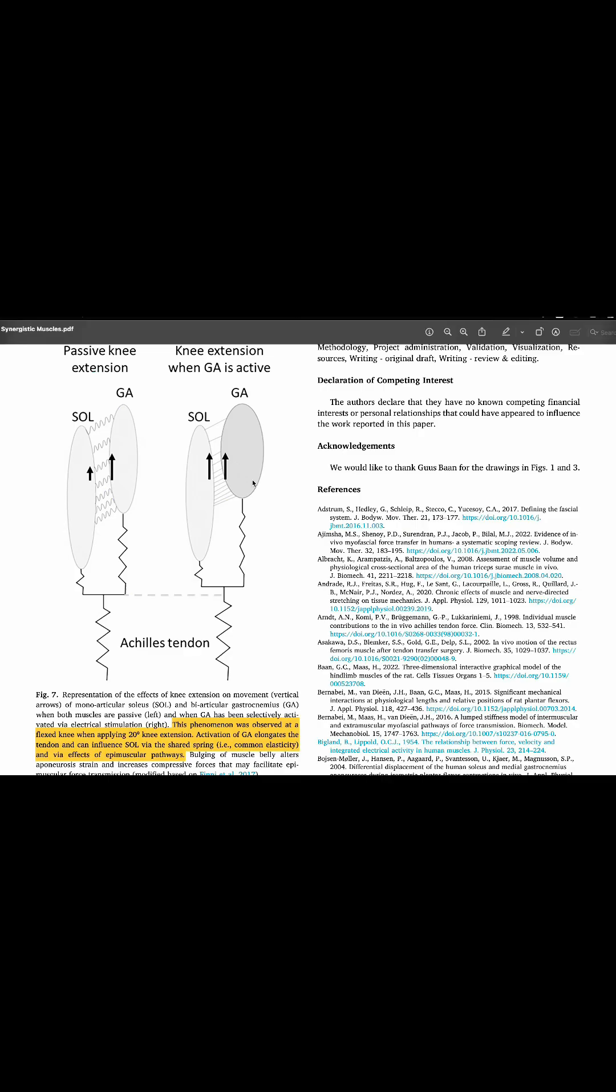So another good example that they show here is how knee position or degree of knee flexion or extension influences the epimuscular force transmission between the soleus and the gastrocs. So as we know about these two muscles, the gastroc is going to cross both the knee and the ankle joint, whereas the soleus is not going to cross the knee joint.